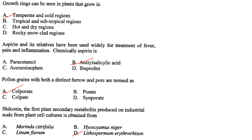Pollen grains with both a distinct furrow and pore are termed colporate. Answer is option A.